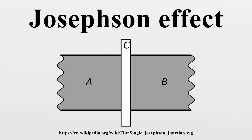The DC Josephson effect is a direct current crossing the insulator in the absence of any external electromagnetic field. Owing to tunneling, this DC Josephson current is proportional to the sine of the phase difference across the insulator, and may take values between negative and positive I_c.